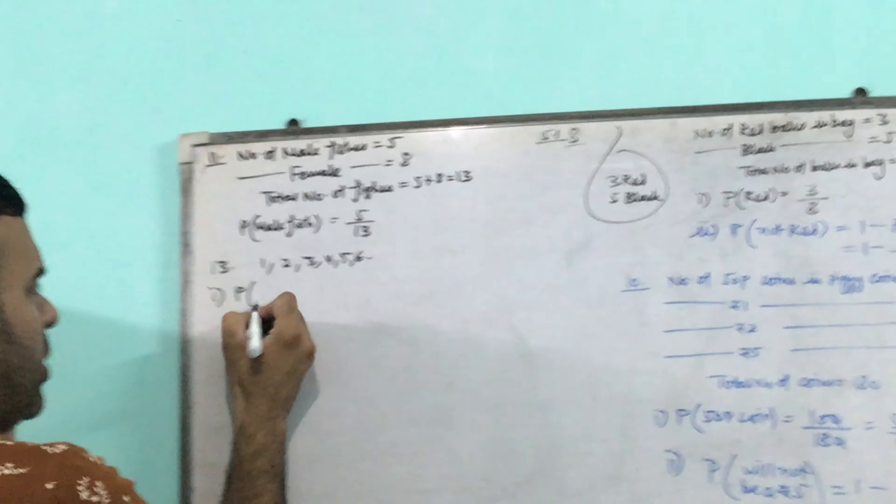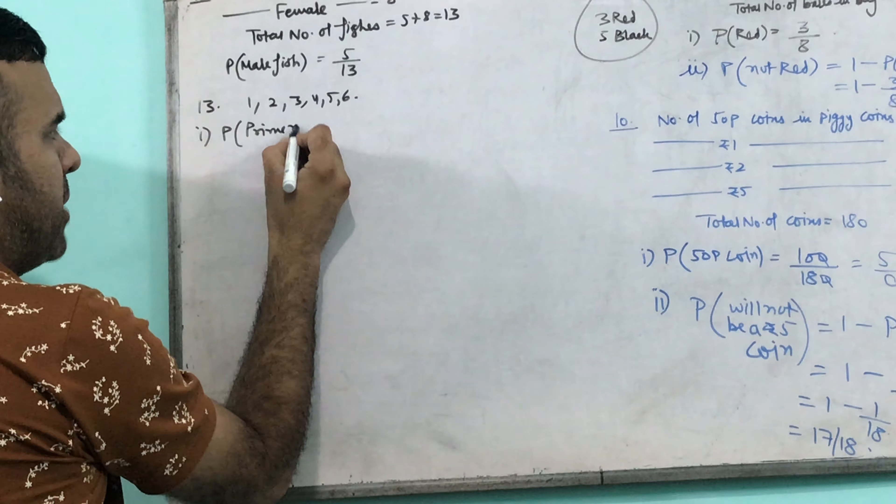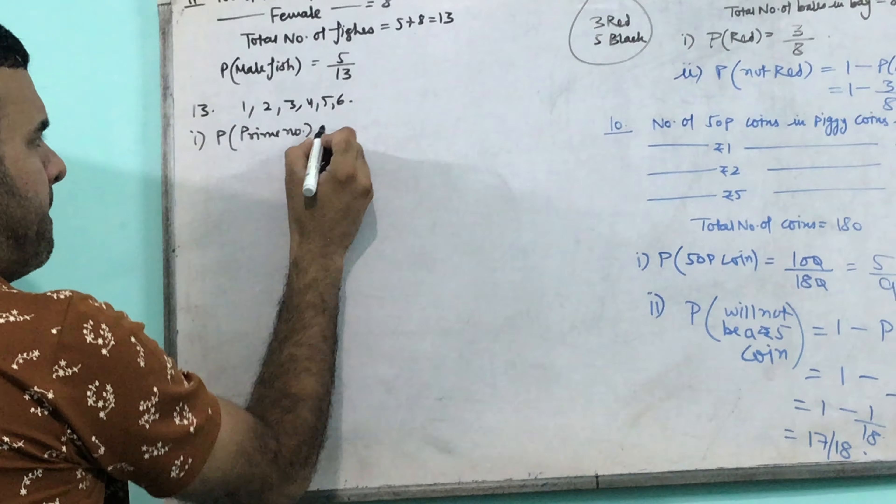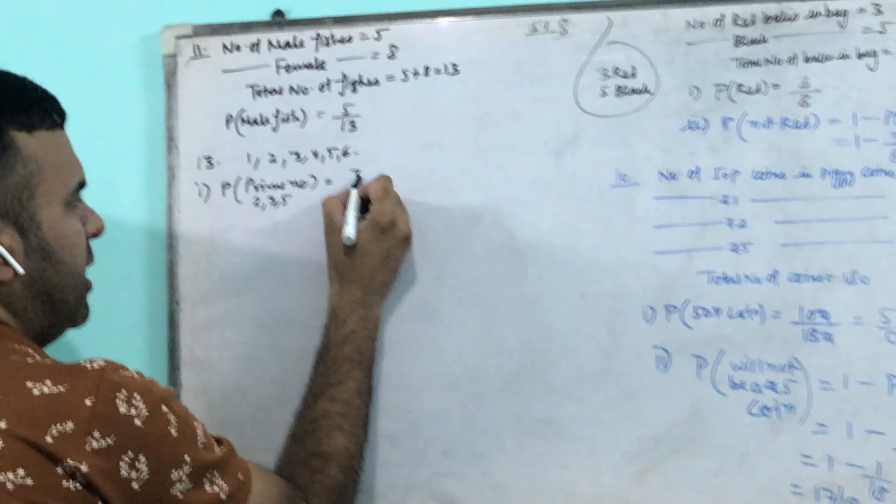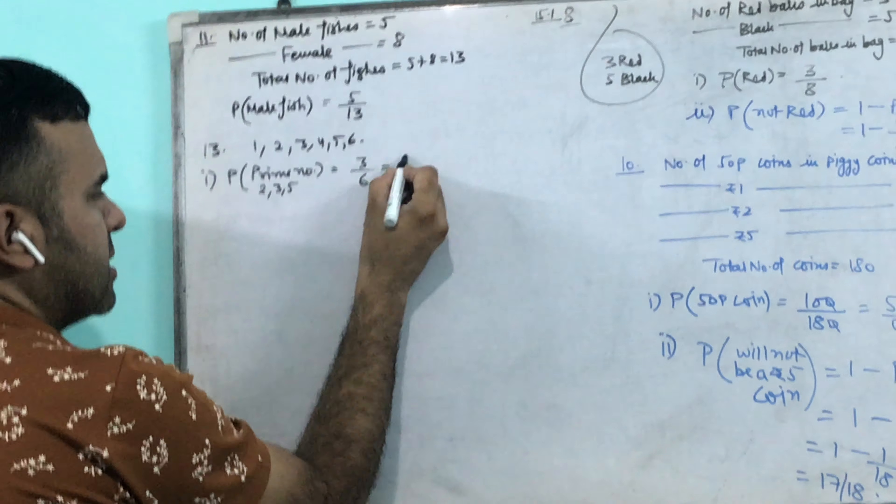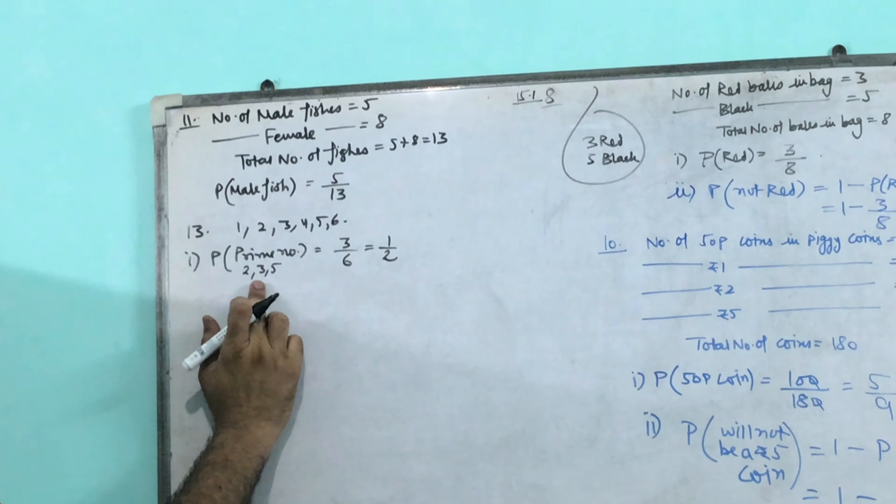What is the probability of getting a prime number? First tell me prime numbers from 1 to 6: 2, 3, 5. That means three favorable and total is 6, so answer is 1 by 2.